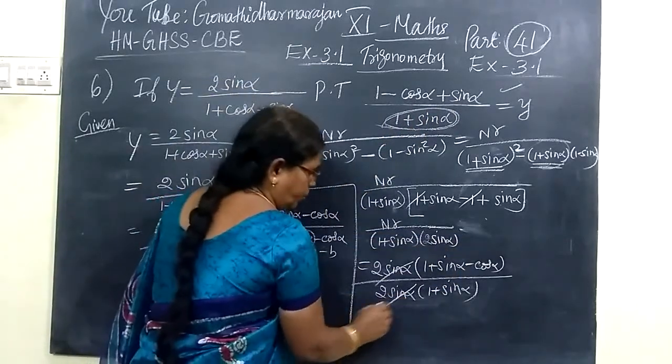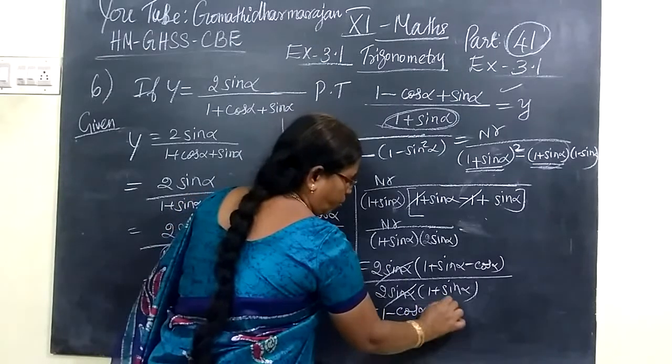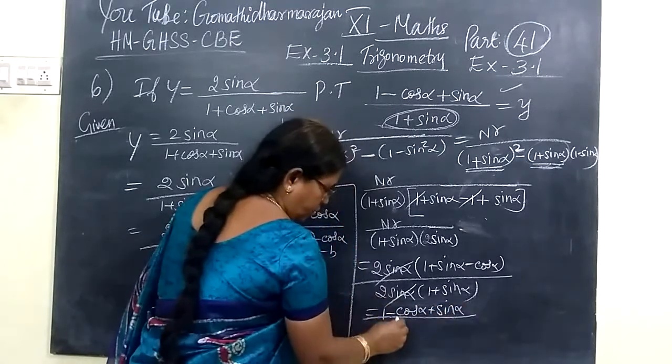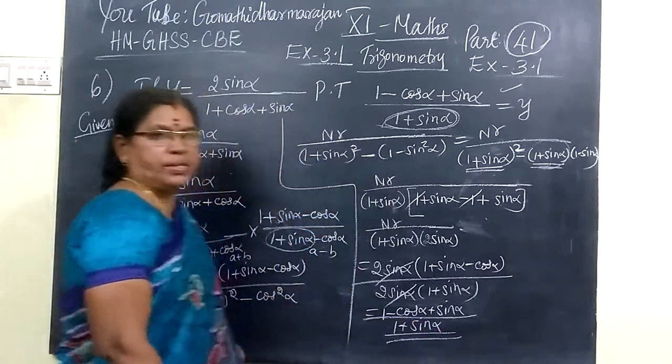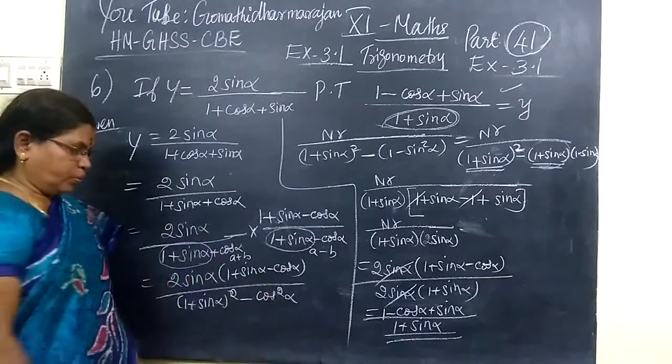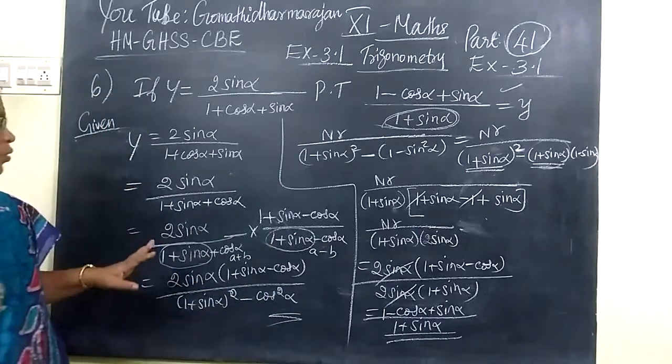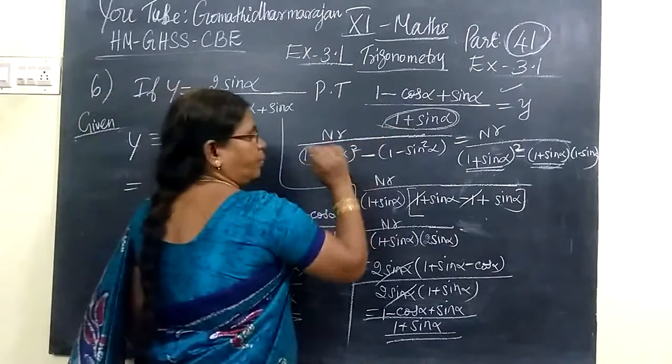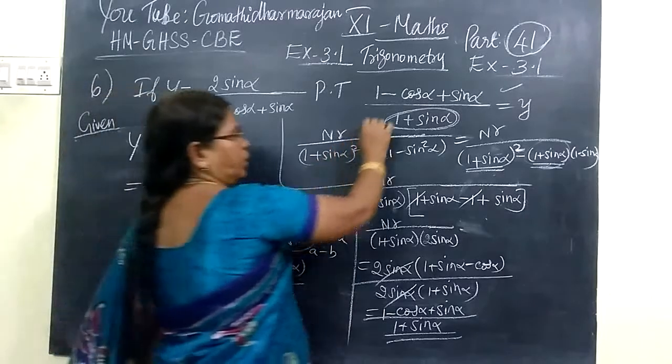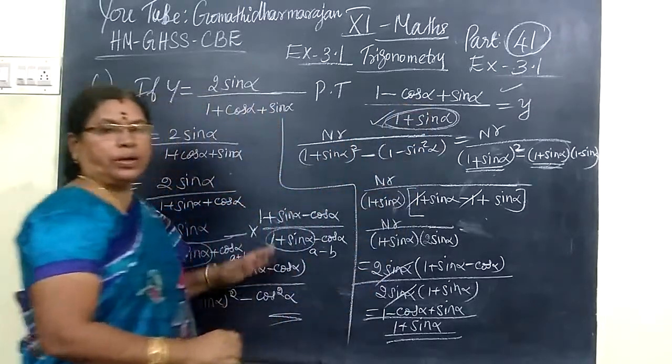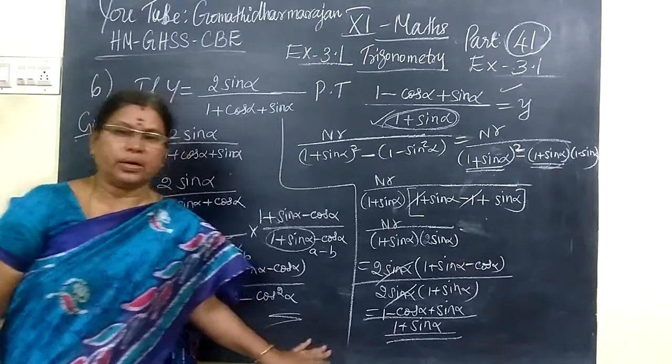So in the final term, 1 minus cos alpha divided by 1 plus sin alpha. This is very very simple. The only thing you want to know is how to eliminate. We want only this term here. This way, you see the structure. Now see the next step. Thank you.